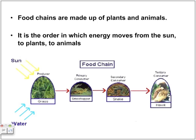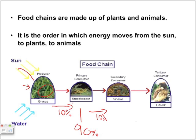This diagram shows the producers getting their energy from the sun through photosynthesis. From that energy, it's stored in the tissues of the producers. And when the next consumer eats it, only 10% is gained, and 90% is lost. Then it keeps going on, so it would be the 10% of that 10%, and so on.